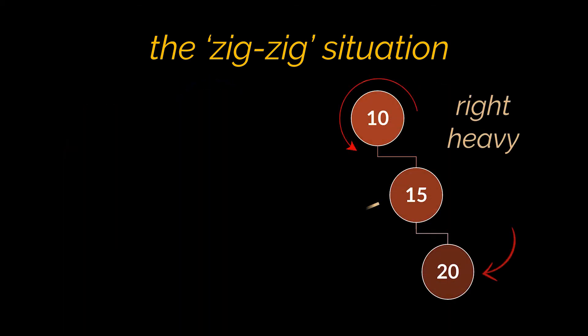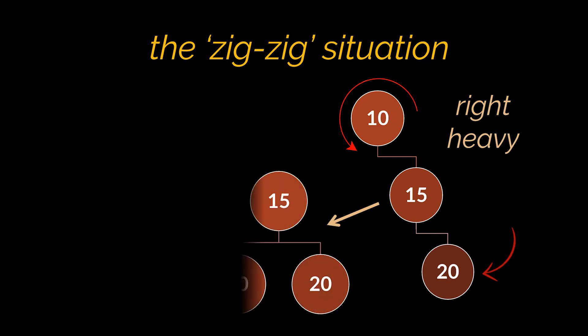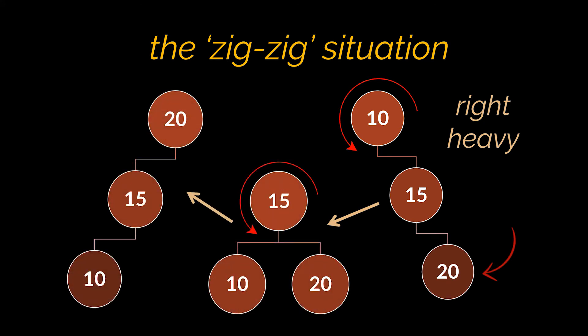Conversely, if the node we want is heavily located to the right, we need a left rotation on its grandparent followed by another left rotation on its parent. In the example, we apply a left rotation on node 10 followed by another left rotation on node 15 in order to bring node 20 to the top.